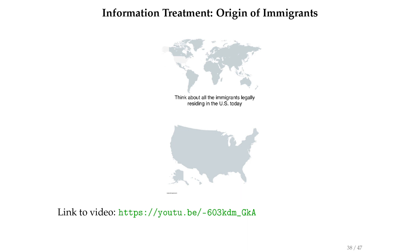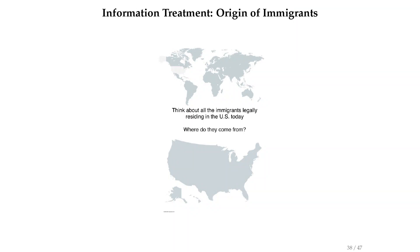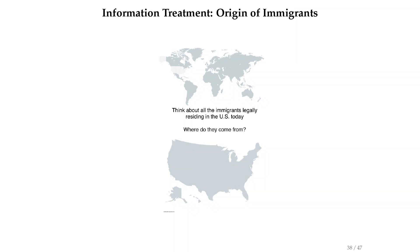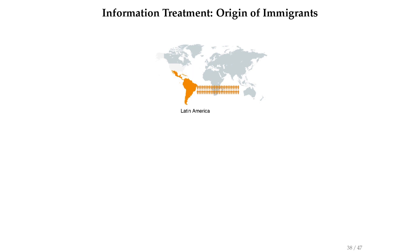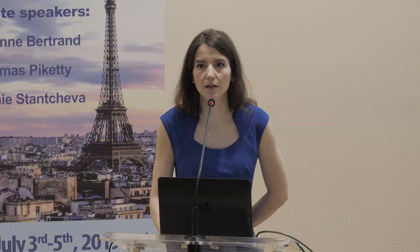What about the origin of immigrants? I'm very sad not to see the video here because it's very cool. Think about all the immigrants legally residing in the US today — there's a map of the world and we ask where do they come from. We highlight and color each region of the world with a number of little stick figures proportional to the true number of immigrants. It's not giving raw numbers — it's showing visually where the immigrants come from. These little stick figures go and get assigned to the bottom of the screen.